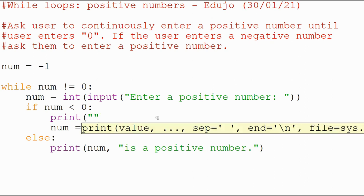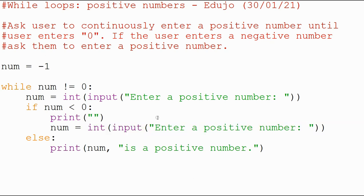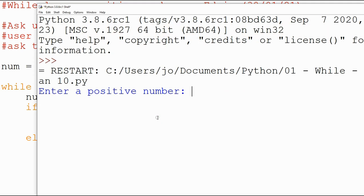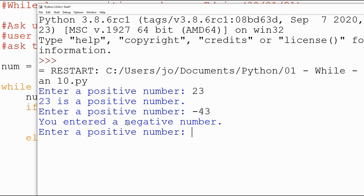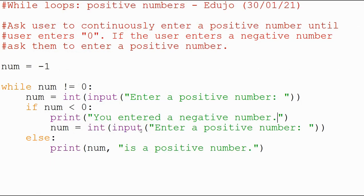You could also put in another bit over here just to help your user understand that they entered a negative number: 'you entered a negative number'. Now let's run it and see what happens. Enter a positive number: 23. Minus 43—you've entered a negative number, enter a positive number. Then 22, and get out of it with zero. Perfect.